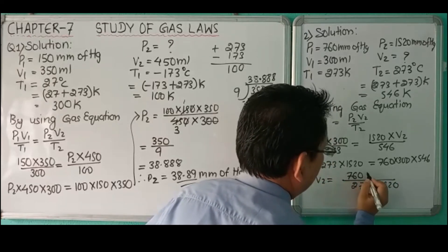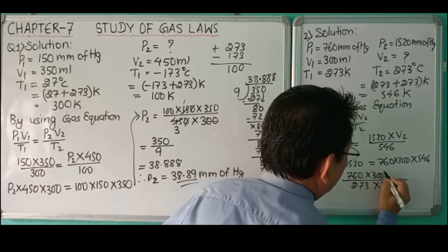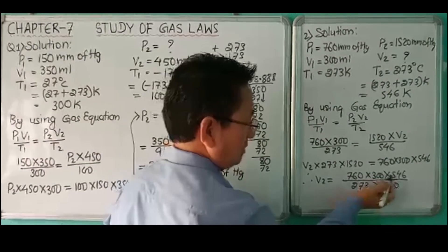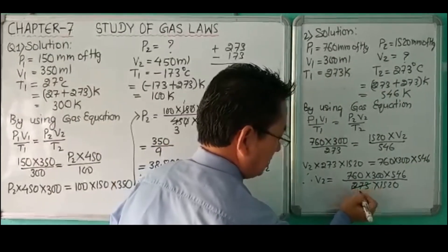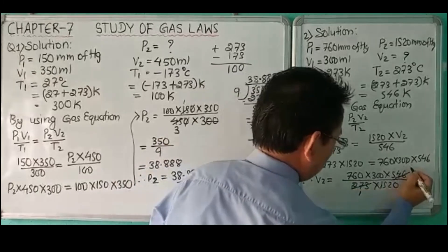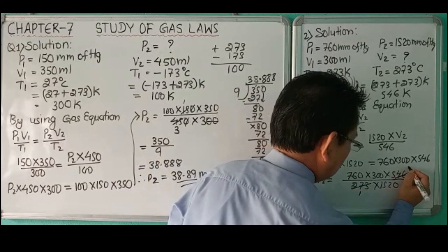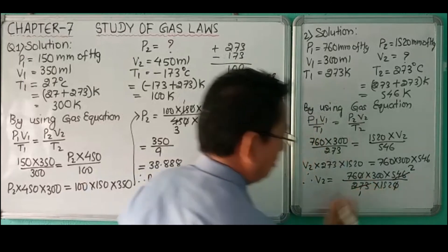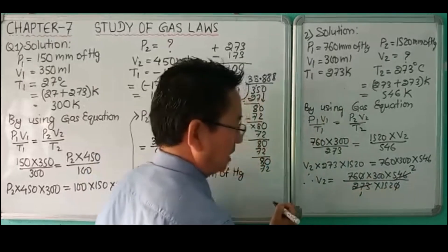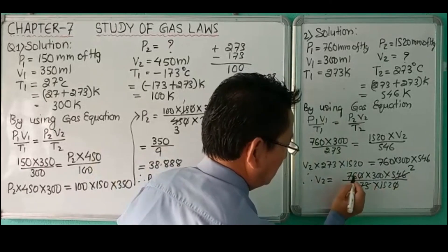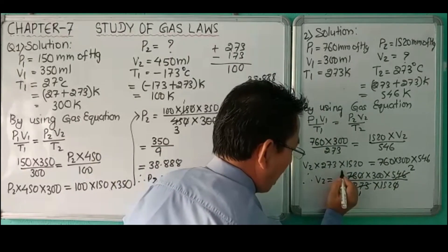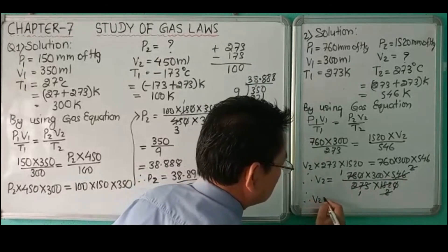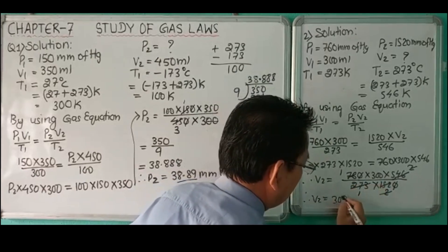Therefore V2 equals 760 times 300 times 546 over 273 times 1520. 273 times 1 is 273, 273 times 2 is 546. This 0 cancels. 2 times 6 is 12, 2 times 7 is 14, this 2 and 2 cancel. Therefore V2 equals 300 milliliters.